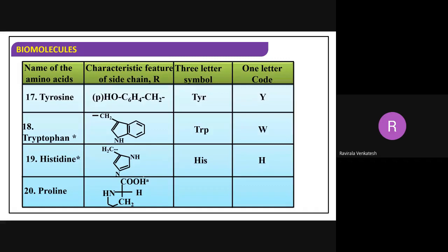Proline has a large cyclic structure. If you observe what happens here, it is not called an R group - it is the complete amino acid. There is no separate R group in proline. This alpha carbon is having the amine group, and the remaining forms the ring. Remember: proline is an exception case.